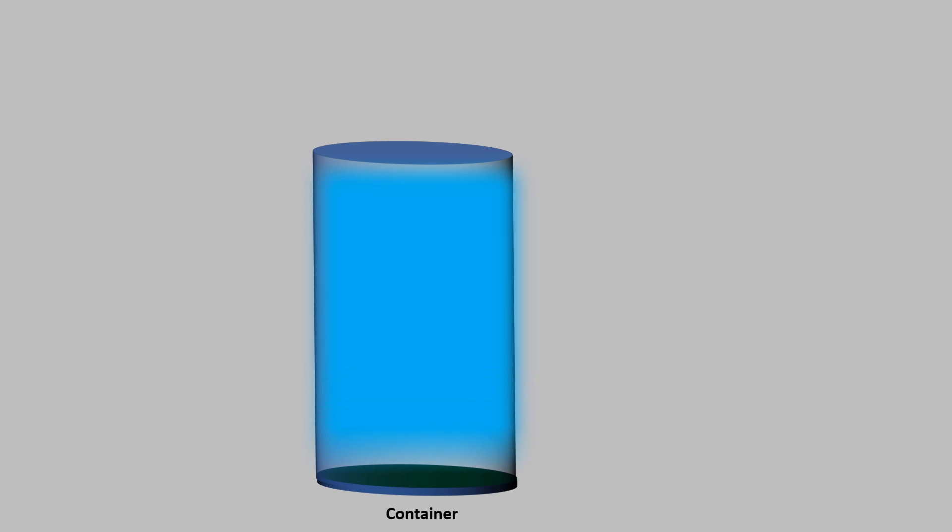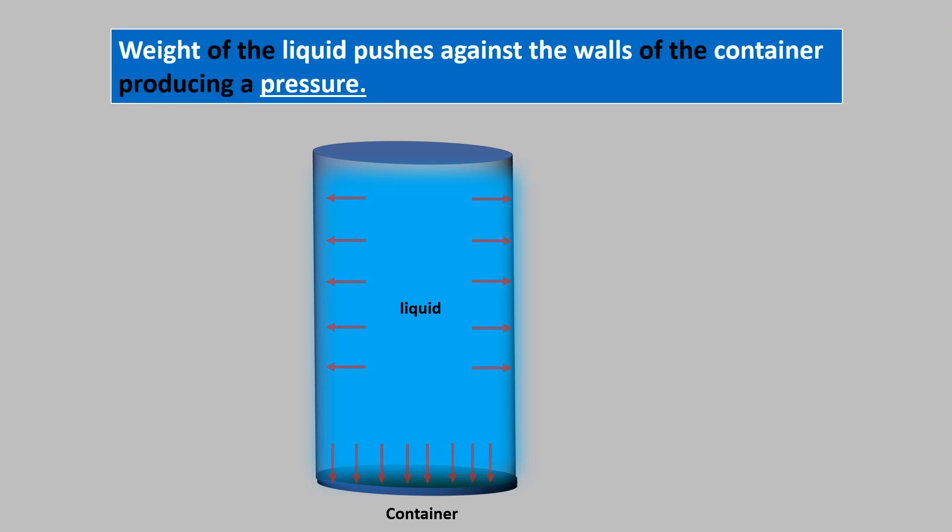Pressure exerted by liquids. All liquids have weight. The liquids exert pressure on the base and walls of the container in which they are stored. When we pour liquid into a vessel, the weight of the liquid pushes down the base of the vessel producing a pressure.